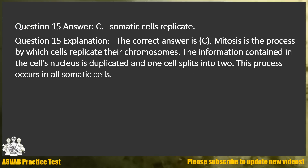Answer: C. Somatic cells replicate. Explanation: The correct answer is C. Mitosis is the process by which cells replicate their chromosomes. The information contained in the cell's nucleus is duplicated and one cell splits into two. This process occurs in all somatic cells.